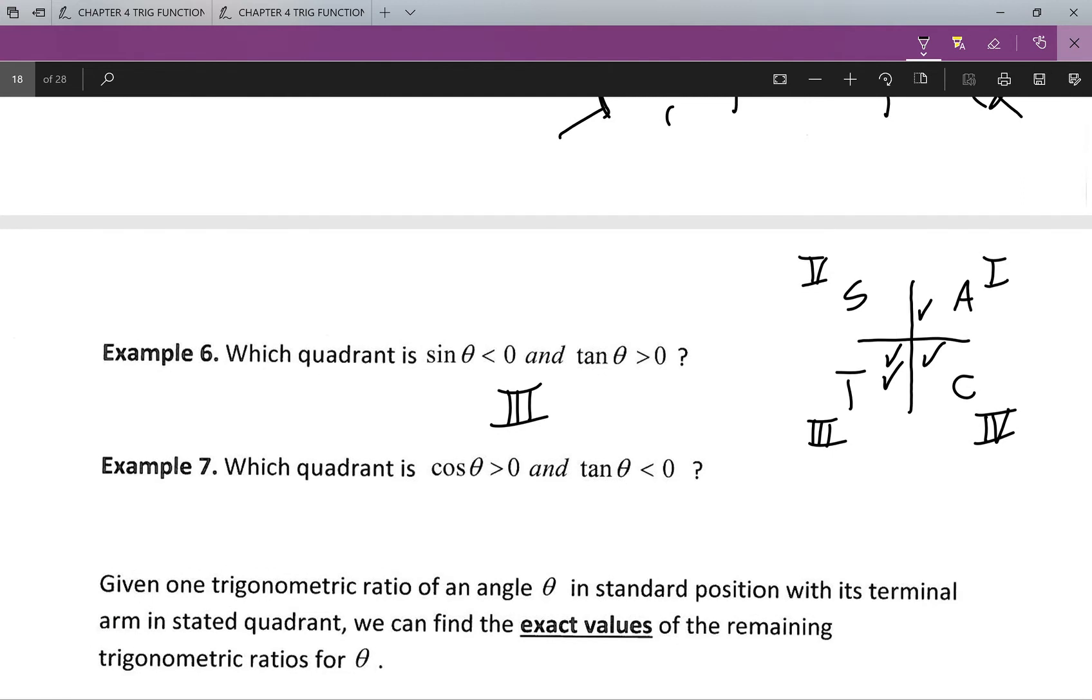In which quadrant is cos theta greater than zero and tan theta less than zero? So we'll just switch up. Which quadrant is cos theta greater than zero? So it's positive in four and one.